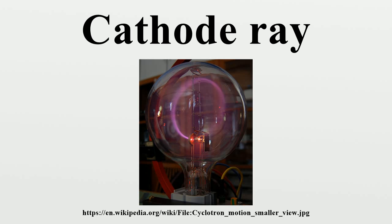In a Crookes tube, cathode rays travel from the cathode at the rear, striking the glass front and making it glow green by fluorescence. A metal cross in the tube casts a shadow, demonstrating that the rays travel in straight lines. A magnet creates a horizontal magnetic field through the neck of the tube, bending the rays up so the shadow of the cross is higher. When the magnet is reversed, it bends the rays down so the shadow is lower. The pink glow is caused by cathode rays striking residual gas atoms in the tube.